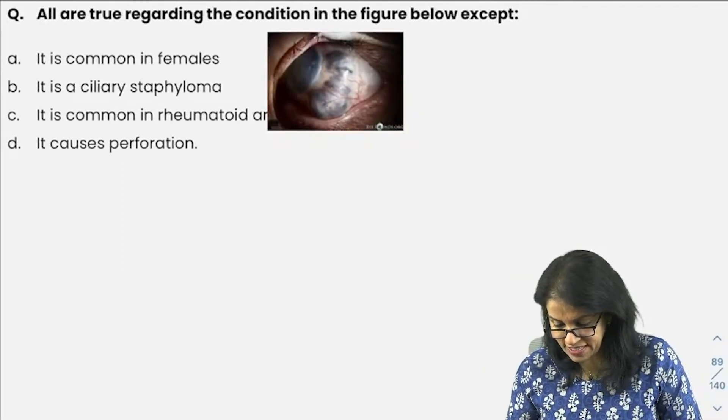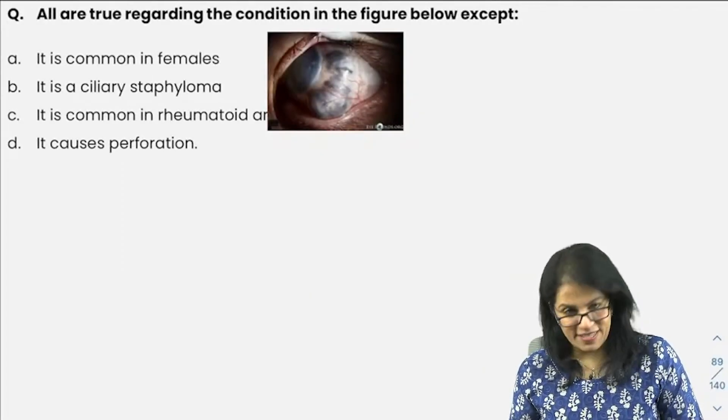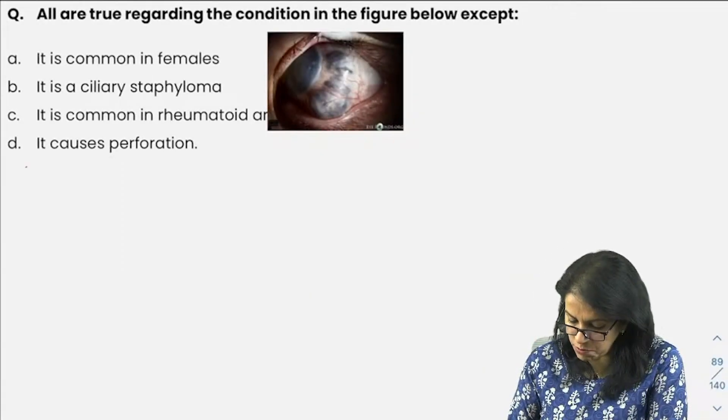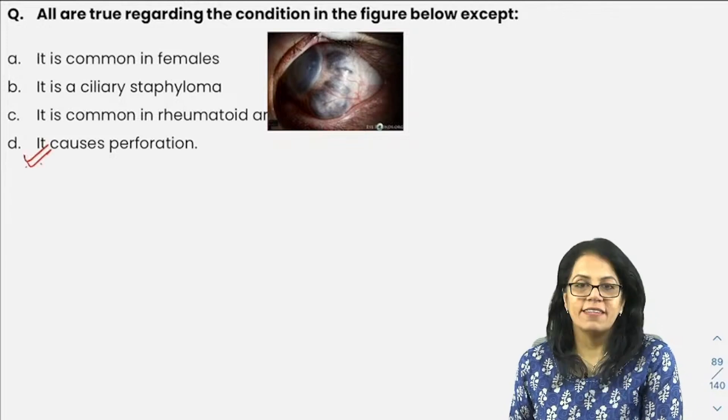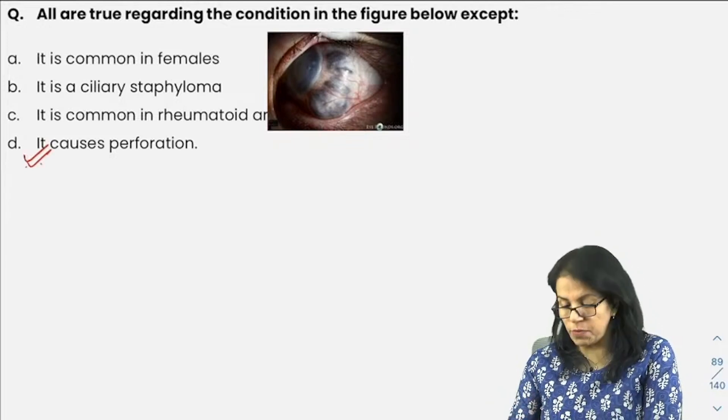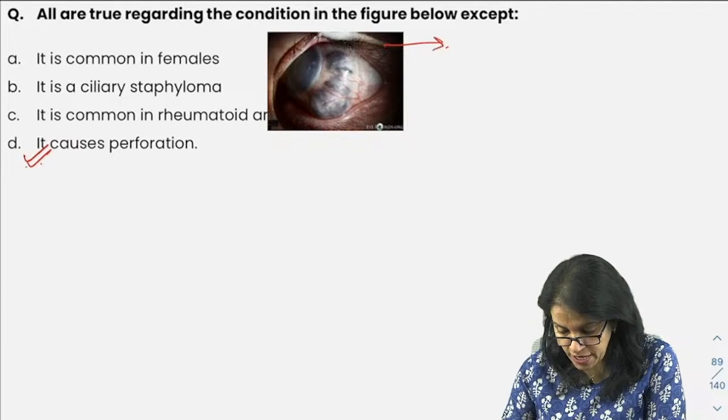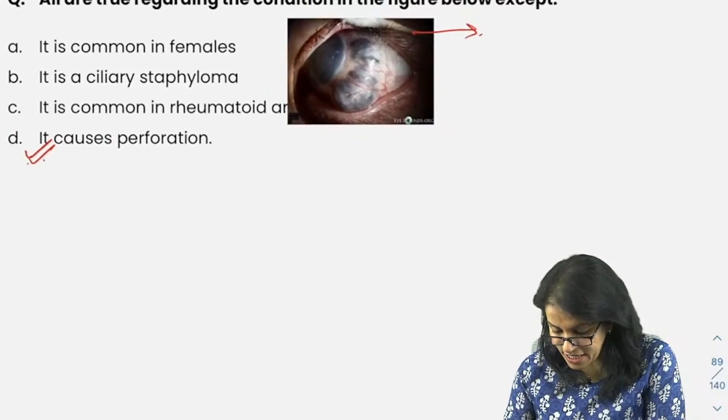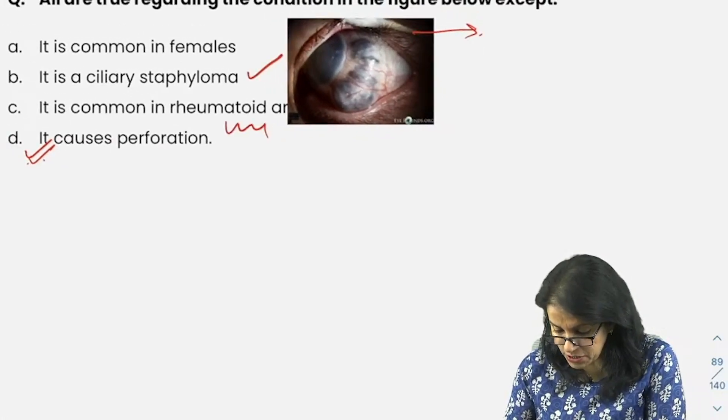We come to the next question: all are true regarding the condition in the figure below except. Very good, it will not cause perforation unless there is an increase of IOP. What is the diagnosis? What you are looking at is the ciliary staphyloma in patients of rheumatoid arthritis.